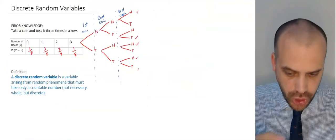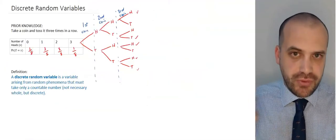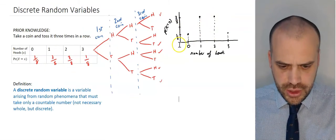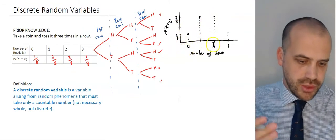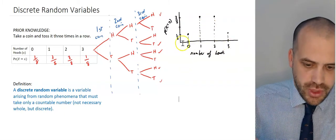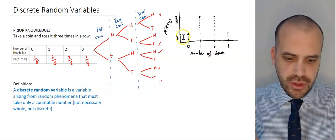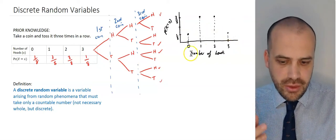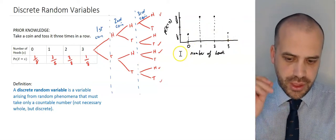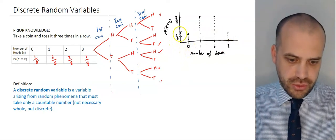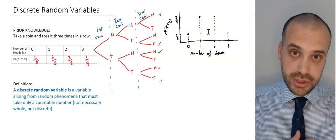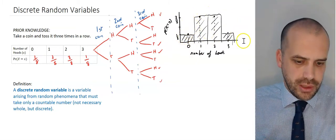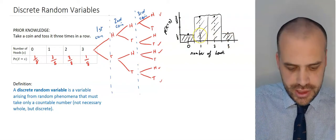I want to show you another way to display this same information. You can draw it as a graph, with the number of heads — zero, one, two, or three — on one axis and the probability of each occurring on the other. This is a discrete random distribution, and this is what the distribution looks like. Be aware that some software might show it looking slightly different, but the idea is the same.